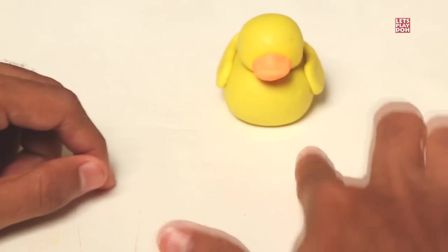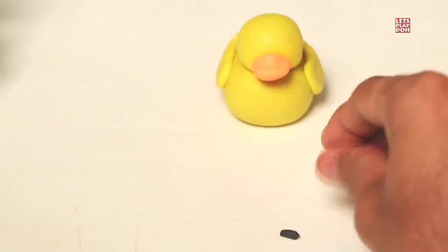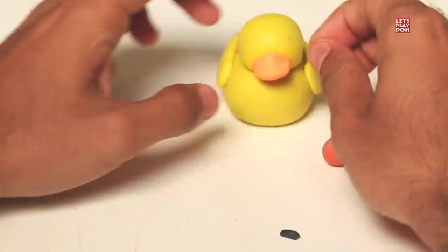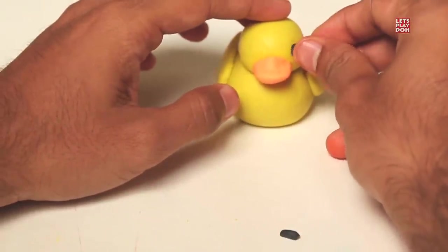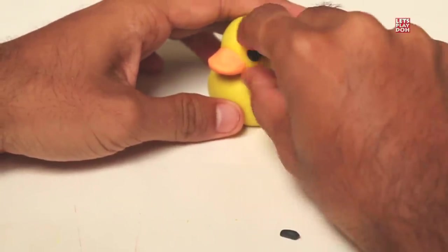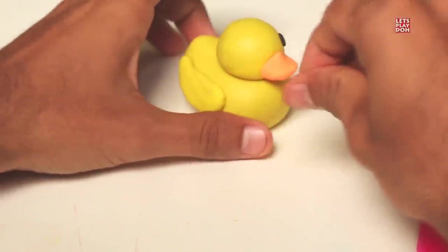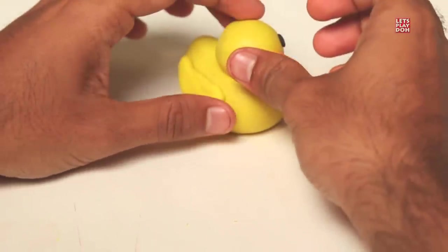So let's take some black play-doh, just a little pinch here. Roll this into a small circle, like a small button, very small button. And you can put that right... I wouldn't put it right on top of the duck bill, but a little bit off to the side. You see what I've done there? Right about there, that's a good spot for the eye.